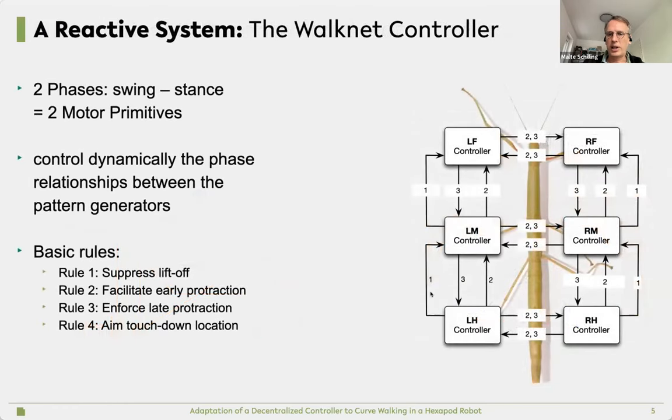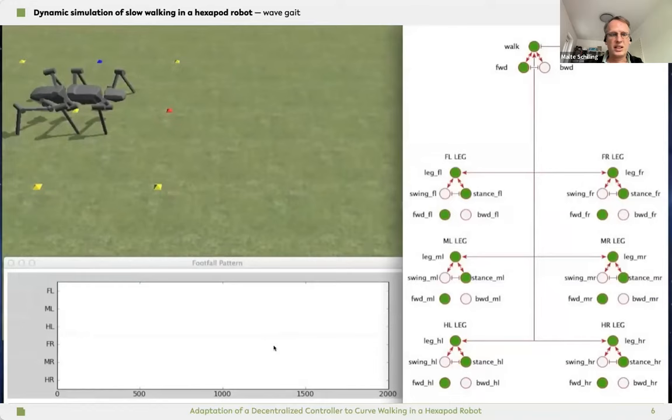That's basically what these rules are doing. I'm only explaining the first rule. It says going from the back to the front, if the hind leg is in the air, it tells the leg in advance, the middle leg, please stay on the ground a little bit longer. This leads to quite emerging gate patterns.